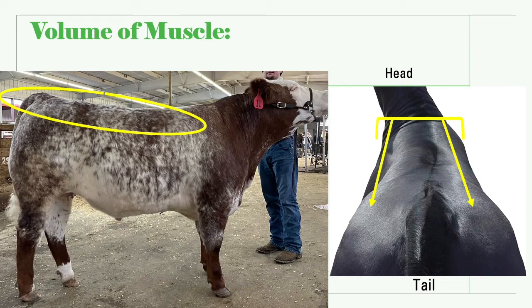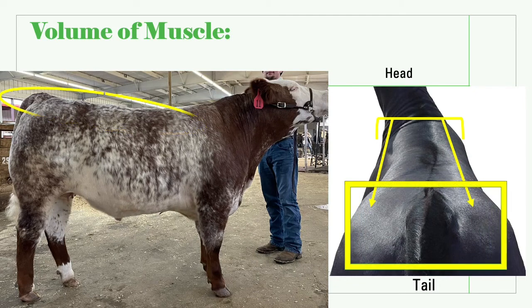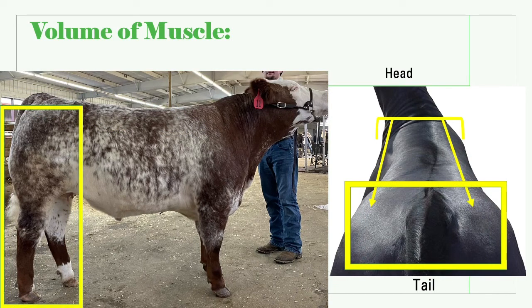Finally, we reach the hip. We want a stout, square hip. From the hip down, cattle should be expressively shaped and deep tying from stifle into their hawk and through their twist.